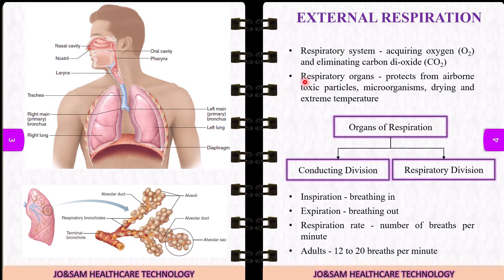If we look at the respiratory organs, starting from the nostril to the alveoli: nostril, nasal cavity, pharynx, larynx, trachea, bronchus, bronchioles, and alveoli.